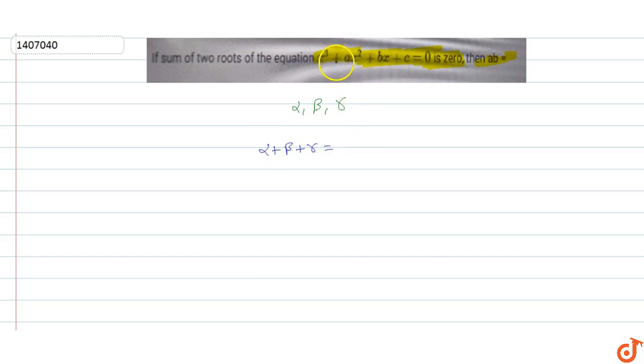If the sum of two roots equals zero, let's say alpha + beta = 0. This is the condition stated in the problem - the sum of two roots of this equation is zero, so alpha plus beta equals zero.